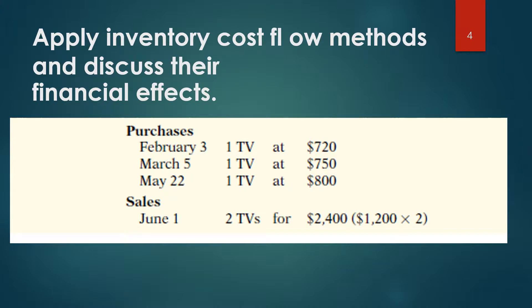For example, cost of goods sold might be $1,470 ($720 + $750), $1,520 ($720 + $800), or $1,550 ($750 + $800). In this section, we discuss alternative costing methods available to Krivet's.